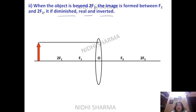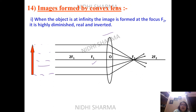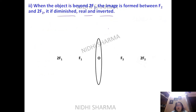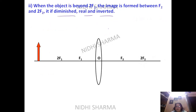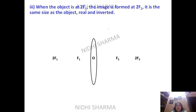The previous case — object at infinity — gives a highly diminished, real, and inverted image. You must write all the image characteristics for each case. Now for the third case: the object is at 2F1.